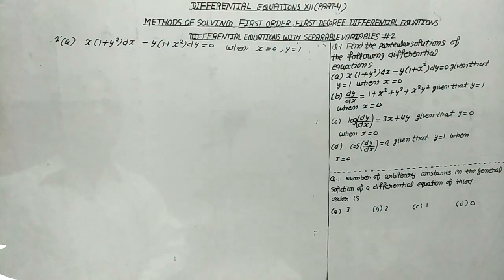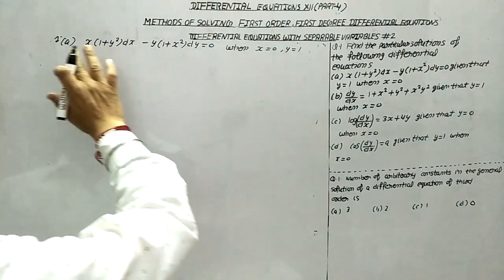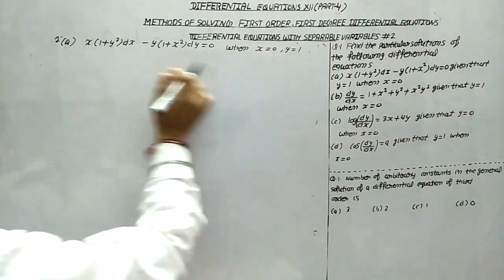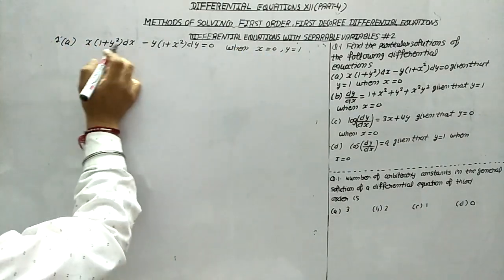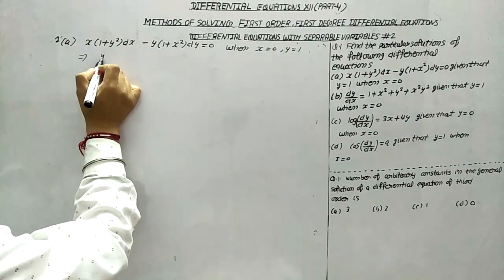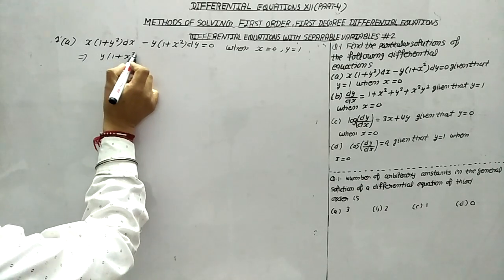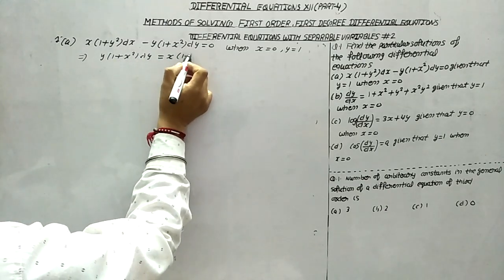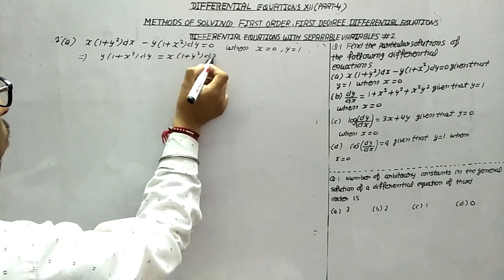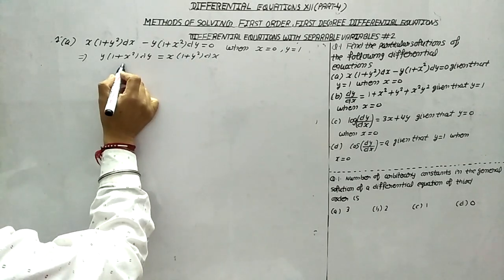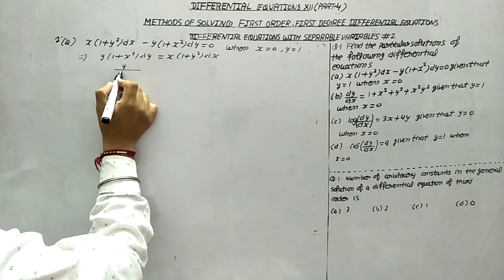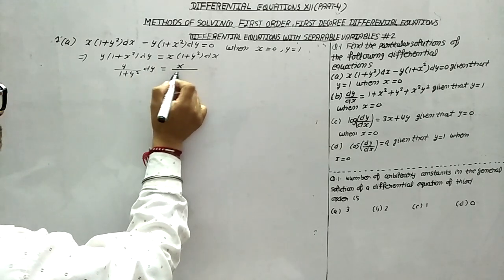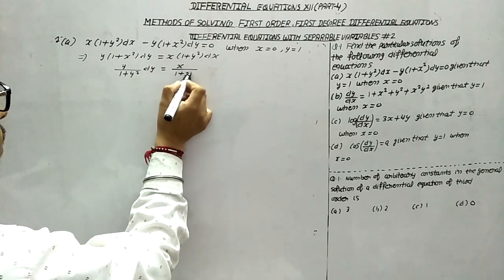In question number 1, this is the differential equation and the initial condition is when x equals 0, y equals 1. First, we rearrange: (1 + x²) dy equals x(1 + y²) dx. By the method of variable separable, this becomes y/(1 + y²) dy equals x/(1 + x²) dx.